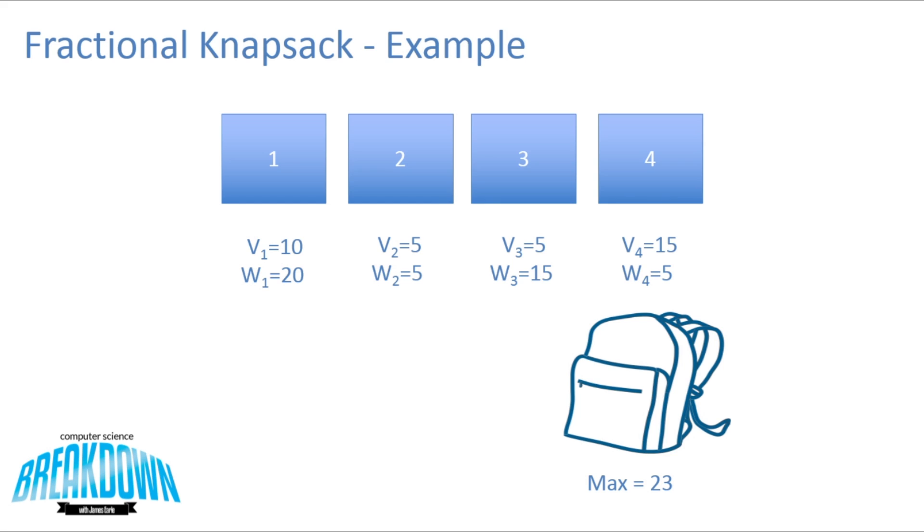So a thief has broken into, let's say, a jewelry store, and he's got a variety of items, each with their own varying weights and values, and he has some maximum capacity for the backpack that he is carrying. So he needs to fill his backpack and find the optimal amount that he can. So for every item, he needs to take as much as he can to try to make as much money as he can. But the big difference with the fractional backpack is that each of these items can be divided. So if he wants to take, say, half of one of these items, he's able to do that.